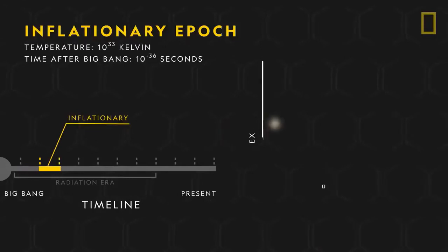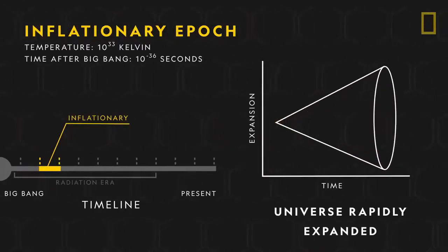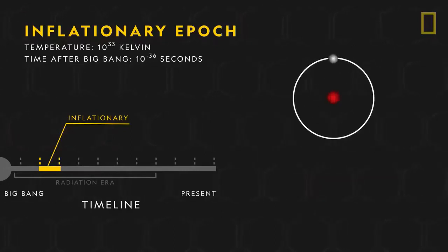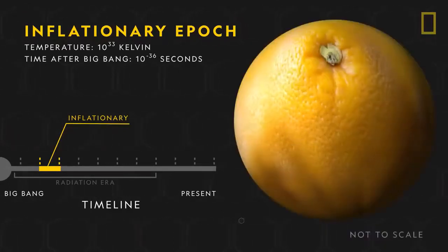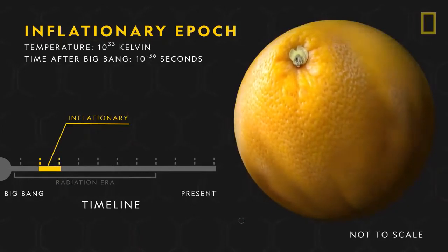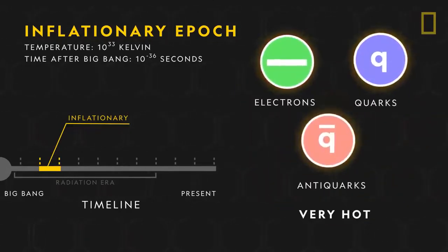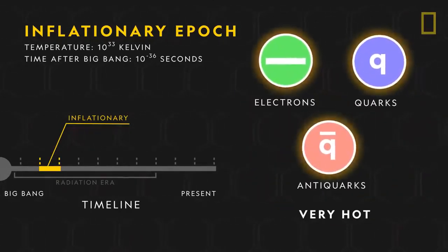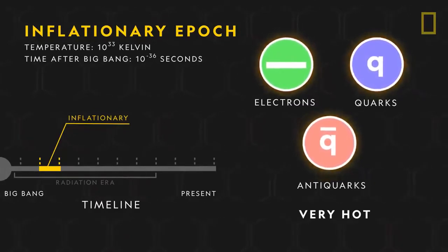Then the inflationary epoch began, during which the universe rapidly expanded. Almost instantly, it grew from the size of an atom to the size of a grapefruit. The universe at this time was piping hot and it churned with electrons, quarks, and other particles.